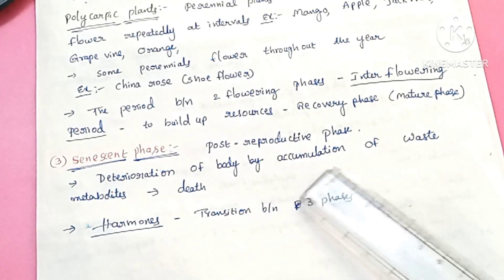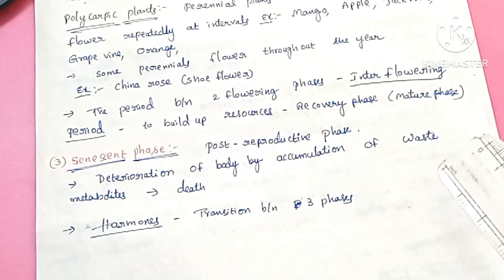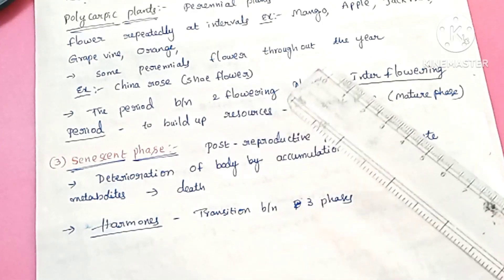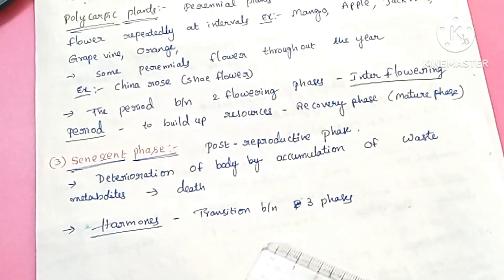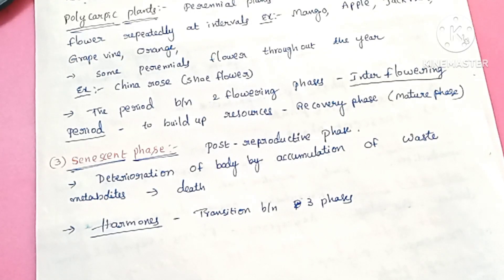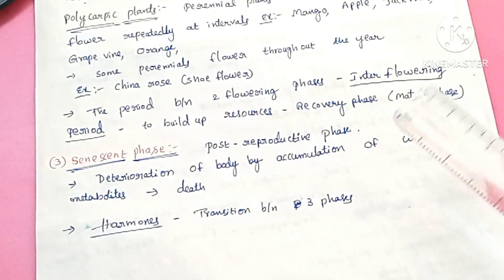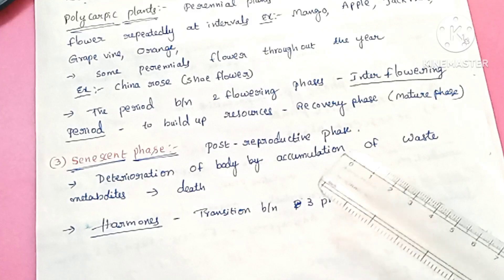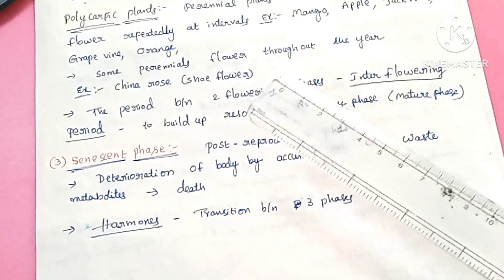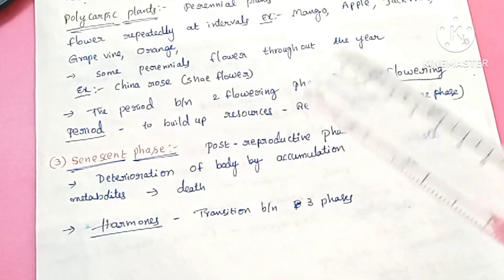The third phase is the senescent phase. In this phase, due to the accumulation of waste metabolites in the body, the plant finally dies. The transitions go from juvenile phase to reproductive phase, and from reproductive phase to senescent phase.